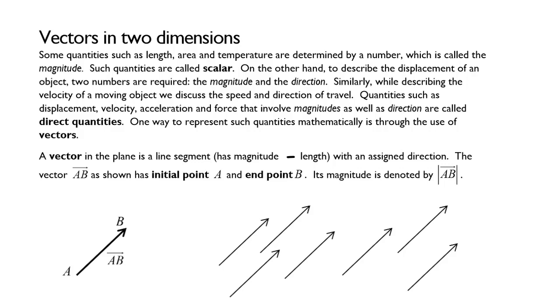Welcome to this section on vectors in two dimensions. Some quantities such as length, area, and temperature are determined by a number, which is called the magnitude. Such quantities are called scalar.